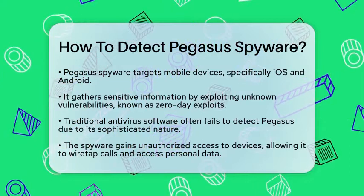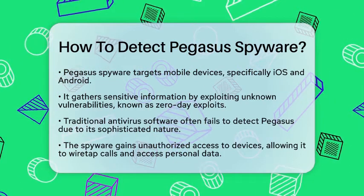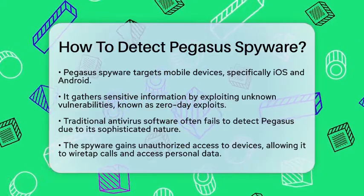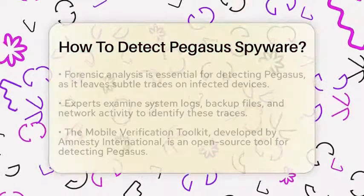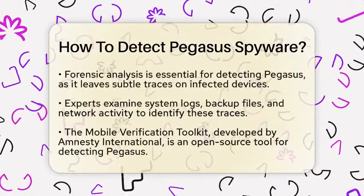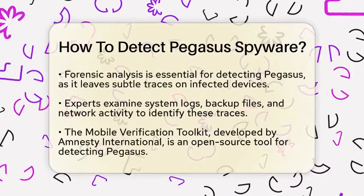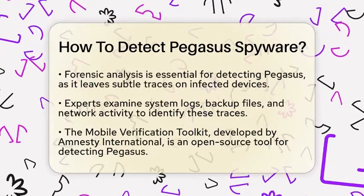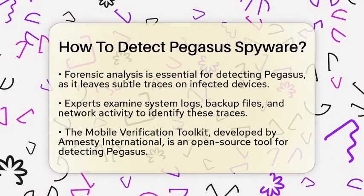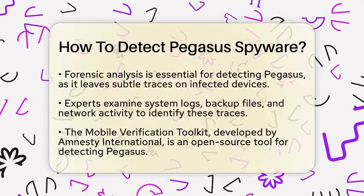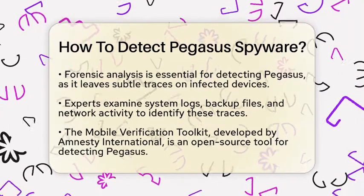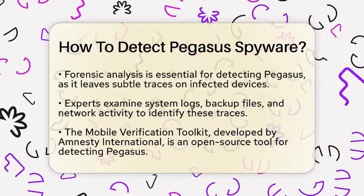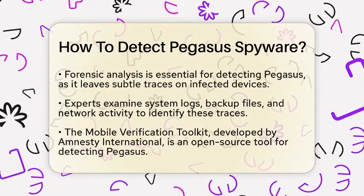One effective method for detection is forensic analysis of device data. Pegasus leaves behind subtle traces on infected devices. By examining system logs, backup files, and network activity, experts can identify these traces. This process often involves extracting encrypted backups from the device and analyzing them on a separate computer to avoid further contamination.